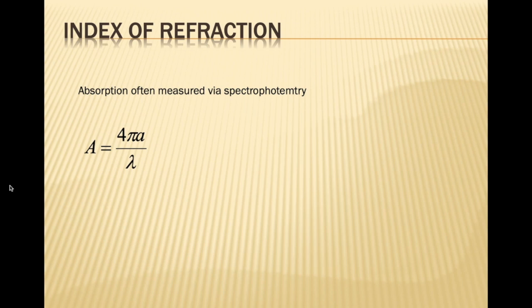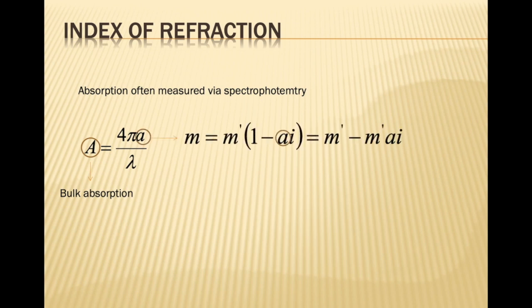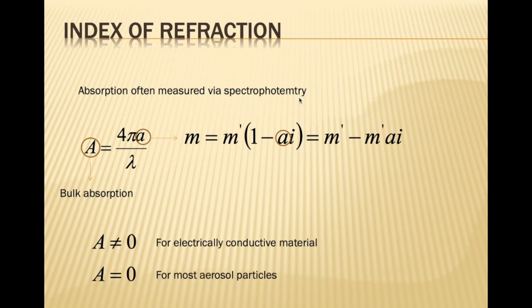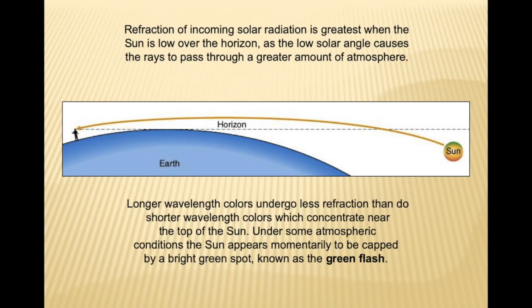The index of refraction for absorption is often measured via spectrophotometry. The formula for absorption is 4πa / λ, where a is the bulk absorption coefficient. If a = 0, the particles are aerosols — most atmospheric particles are aerosol in nature. If a ≠ 0, the material is electrically conductive in nature.